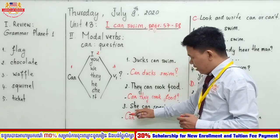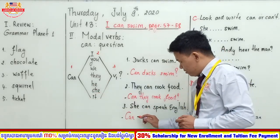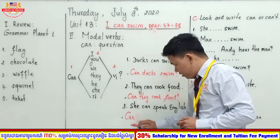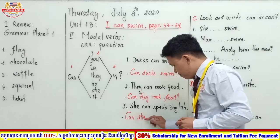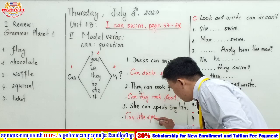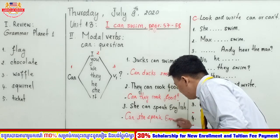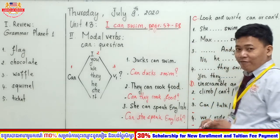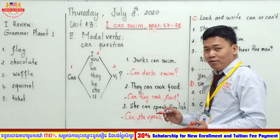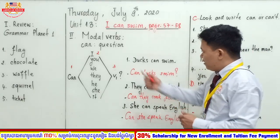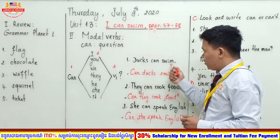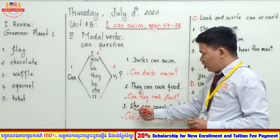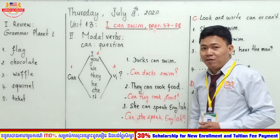Can — subject pronoun she — right, subject pronoun she. Can she speak English. Great, everyone. Now we have done all the sentences. Read together: 'Ducks can swim — Can ducks swim. They can cook food — Can they cook food. She can speak English — Can she speak English.'